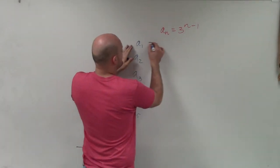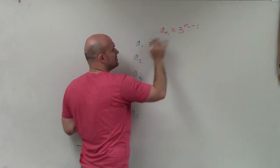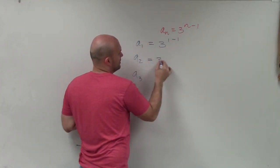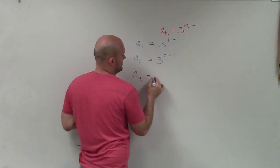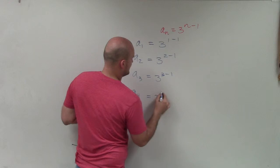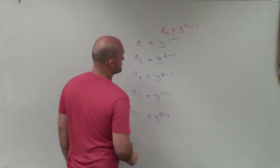So if I want to figure out what a sub 1 is, all I'm simply going to do is where n is in the function, I'm going to plug in a 1. So 3 to the 1 minus 1, 3 to the 2 minus 1, 3 to the 3 minus 1, 3 to the 4 minus 1, and 3 to the 5 minus 1.